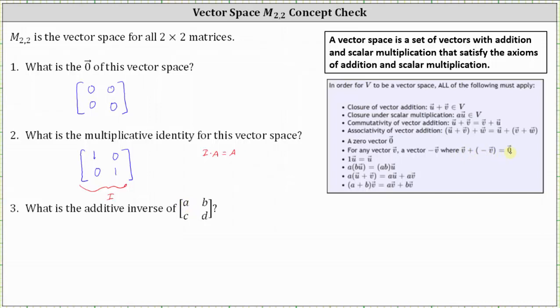which means the additive inverse of the two by two matrix is equal to the opposite of this matrix, or negative one times the matrix, where the entries are negative A, negative B in the first row and negative C and negative D in the second row.